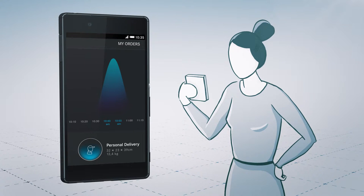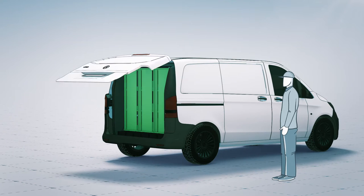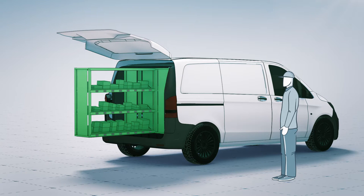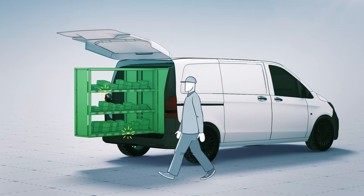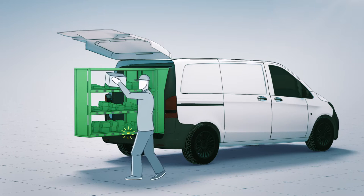Also, the customer receives a message about when the delivery will arrive. Keyless access ensures that the doors open and close automatically. The pick-by-light system shows the driver which shipment to take.